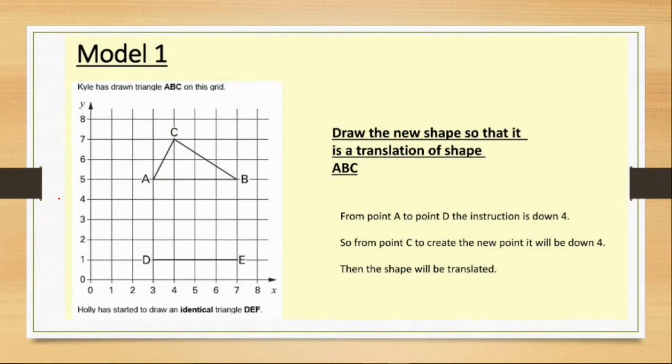So if you look at our first question, Kyle has drawn a triangle ABC on this grid. The reason it is called ABC is because if we look at the points on there, we've got A, we've got B, we've got C. The new triangle we need to draw will be D, E and F. So we're going to translate this one below it. And the first instruction it tells us is that from point A to point D, the instruction is down 4.